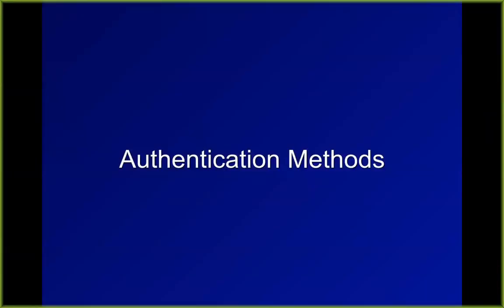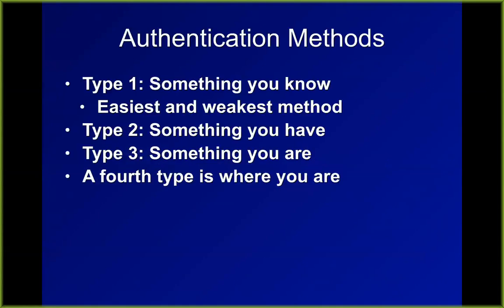You have to authenticate people. Identification is the first step where you claim to be somebody, and authentication is where you prove that with something like a thumbprint or a password. Type one authentication is the most common and weakest method — something you know, like a password. Then there is something you have and something you are.